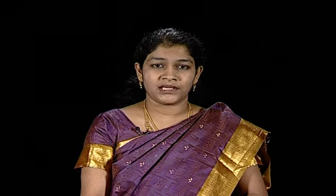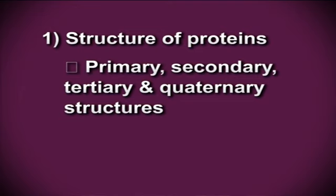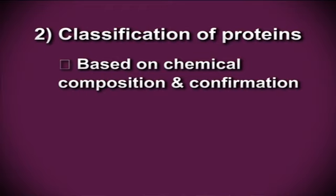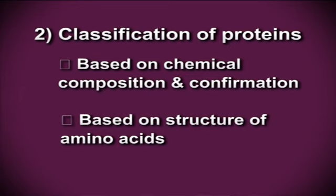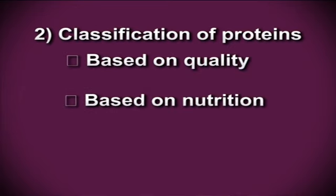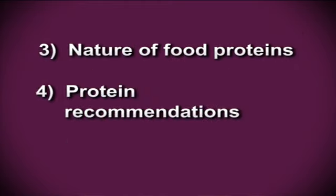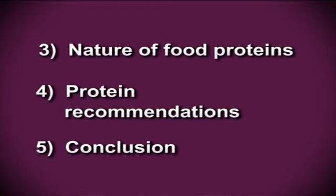We shall study protein structures and their classification in detail under the following subtopics. One is structure of proteins: primary, secondary, tertiary and quaternary structures, stability of proteins and denaturation. Second is classification of proteins based on chemical composition and conformation, based on structure of amino acids, based on quality, based on nutrition, and based on function. Third is nature of food proteins, fourth is protein recommendations, followed by fifth, conclusion.